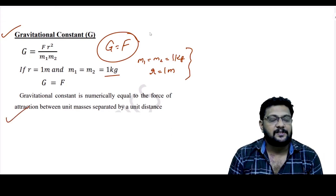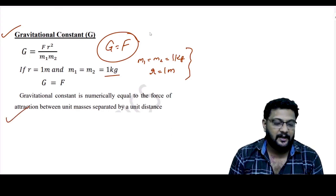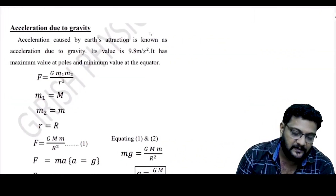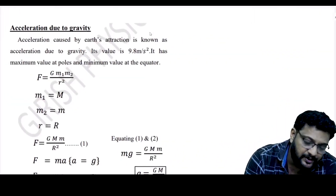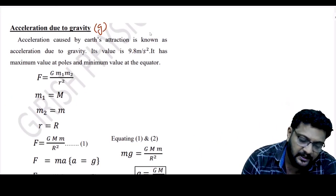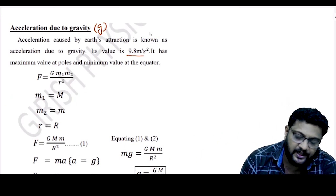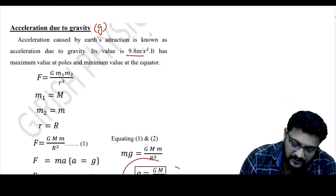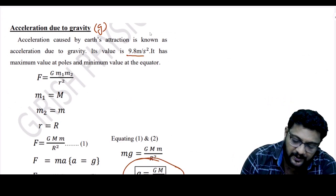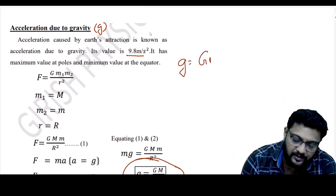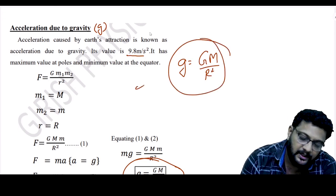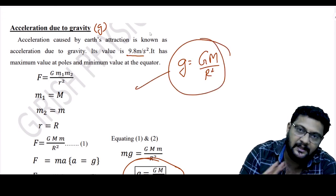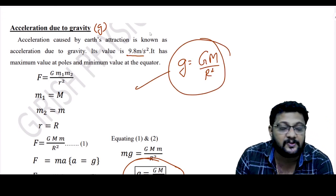Acceleration due to gravity g has a value of 9.8 m/s². The main equation is g = GM/R², where M is the mass of the Earth and R is the radius of the Earth.